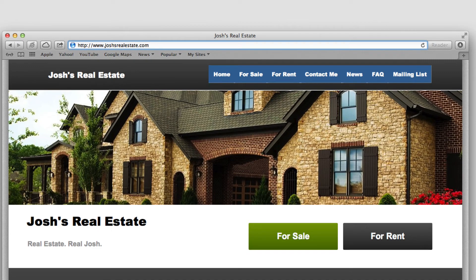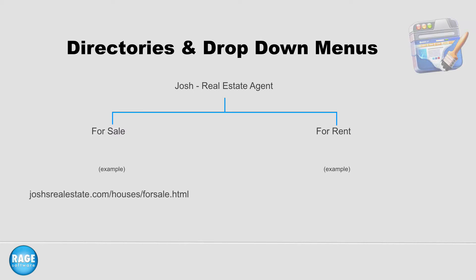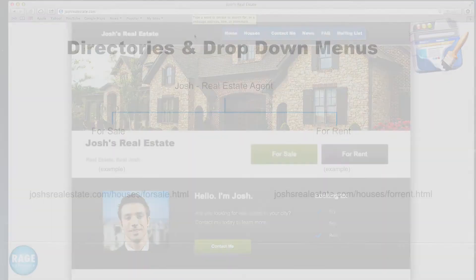But if Josh wanted to group these two items into one category, he can create a directory so that the URLs will be joshsrealestate.com/houses/for-sale.html and joshsrealestate.com/houses/for-rent.html. And his navigation menu might look something like this.